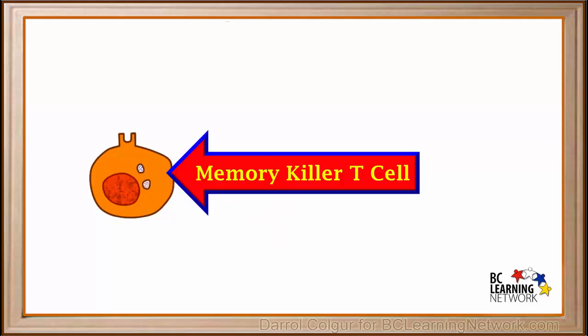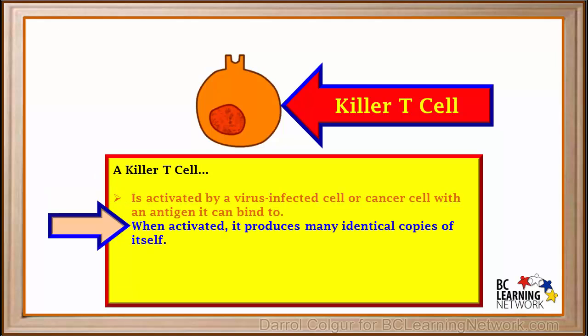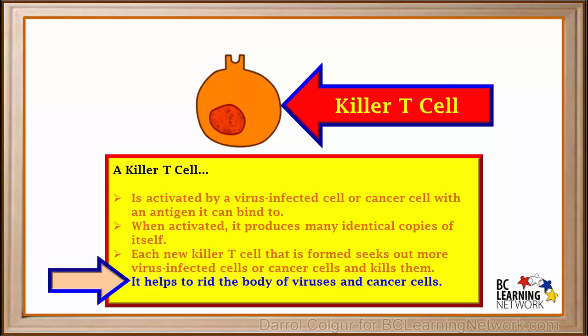After they have killed a large number of cells, most killer T cells will self-destruct. But a few memory killer T cells will remain in the body for a long time, so they can launch a new attack if the need arises. Our body constantly produces many killer T cells. A particular killer T cell can be activated by a virus-infected cell or cancer cell carrying the specific antigen it can bind to. Once activated, it divides and produces many identical copies of itself. Each new killer T cell seeks out more virus-infected cells or cancer cells to kill. When viruses enter the body, they infect body cells and use them as factories to reproduce themselves. A killer T cell will destroy these infected cells before they get a chance to become virus factories. In this way, killer T cells help rid the body of viruses and cancer cells, forming a very important part of our immune system.